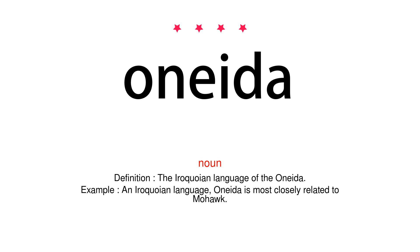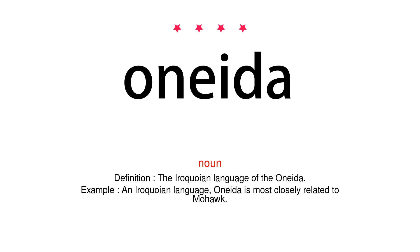Noun. Definition. The Iroquoian language of the Oneida. Example. An Iroquoian language, Oneida is most closely related to Mohawk.